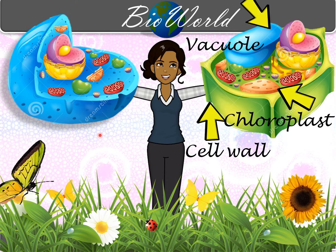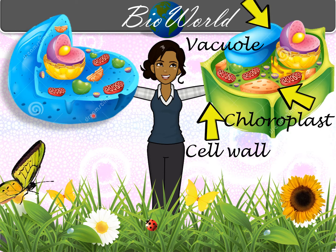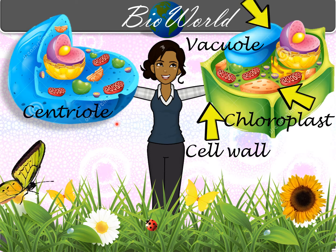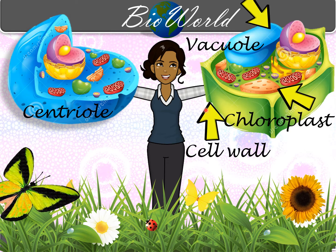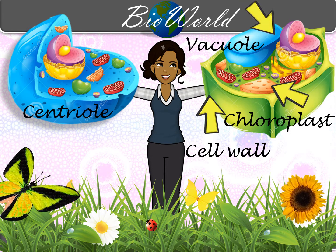However, animal cells have one structure that plant cells do not have. That structure is not visible in this diagram, but it is the centriole. These are diagrammatic representations of animal cells and plant cells. Let's have a look at what the cells look like under an electron microscope.